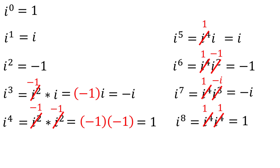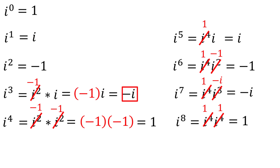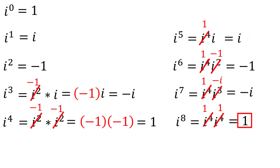So we see i goes in a cycle of i, negative 1, negative i, and 1, forever and ever, every four powers.